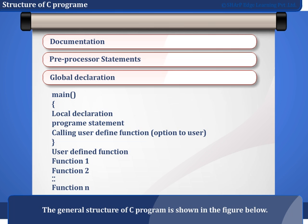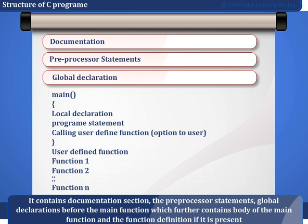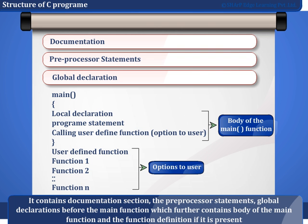The general structure of a C program is shown in the figure below. It contains a documentation section, the preprocessor statements, global declarations before the main function, which further contains the body of the main function and the function definition if it is present.